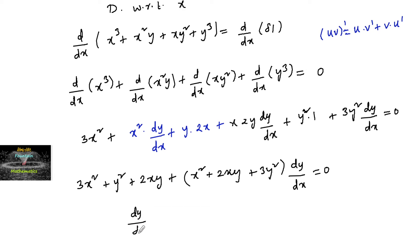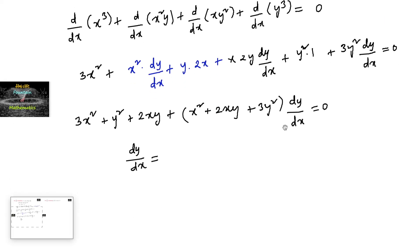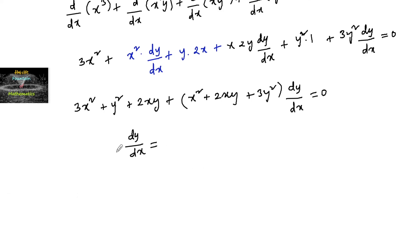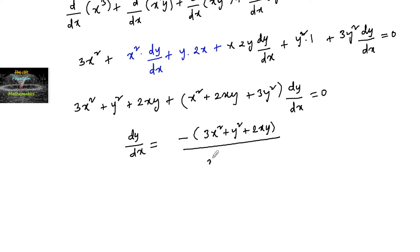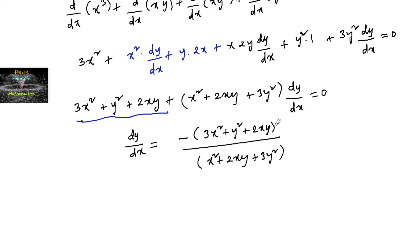Solving for dy/dx: we take the non-dy/dx terms to the other side, giving dy/dx equals negative of (3x² + y² + 2xy) divided by (x² + 2xy + 3y²). Cross-multiplying gives us the final answer.